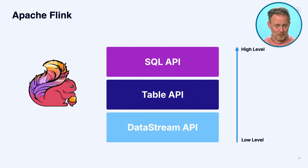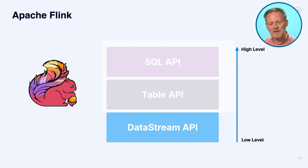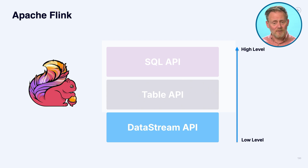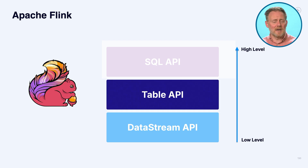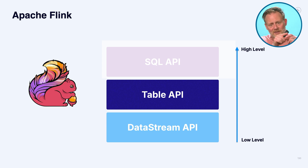There are three APIs you get to choose from in Flink. We start at the bottom with the DataStream API — the earliest and lowest-level one. There are folks who have used it for years and are happy with it, but it's probably not recommended for new designs. It's harder to learn, and most current research and development is going into the Table API, not the DataStream API. The Table API is much easier to understand.